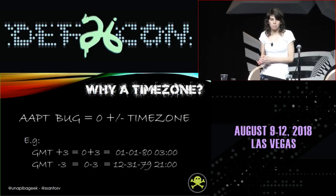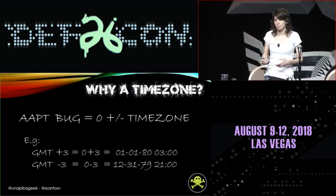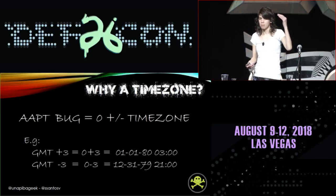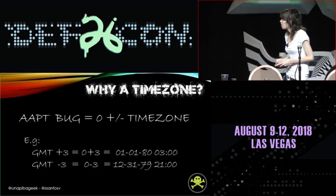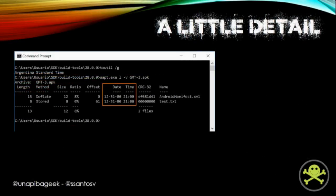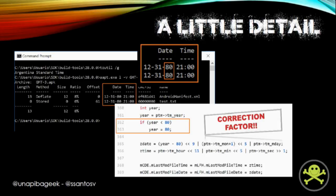In the case of GMT minus three, the subtraction is zero minus three. This affects the day too — we see December 31 of 1979 and 21 in the hour field, since 21 is the result of 24 minus three. Those GMT minus offsets might look confusing, so we made an offset table. When using AAPT, instead of seeing December 31 of 1979, we'll see 80 in the year field, because of a correction factor in the source code — there's an 'if' statement saying that if the year is less than 80, the year becomes 80. This confirms we are analyzing it correctly.